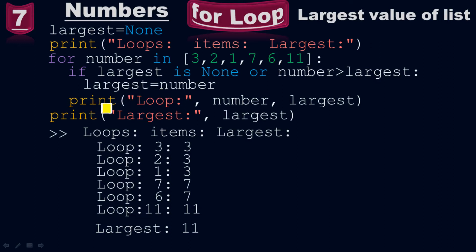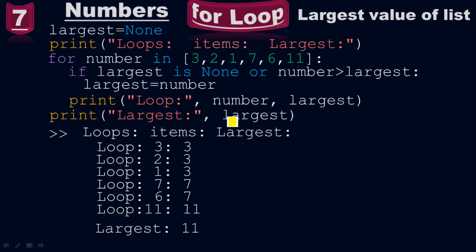When you look at the print function, we have print of 'loop:', number, largest. Loop colon is here, numbers are these, and largest values are these. Similarly, the outermost print function is for the largest value. At the end, you will print the largest value, which is 11. 11 is the largest value.